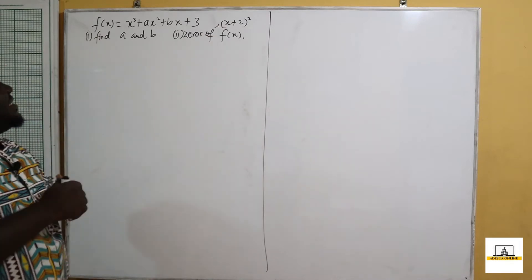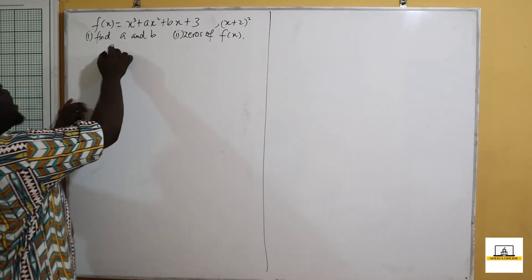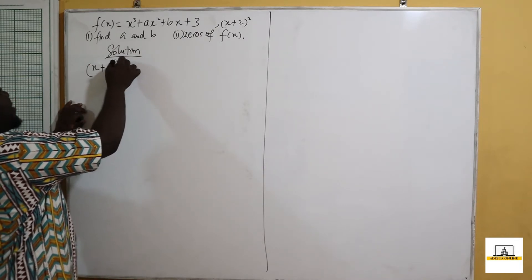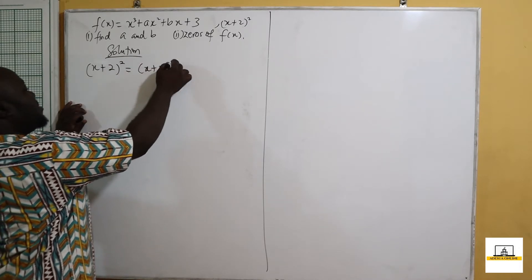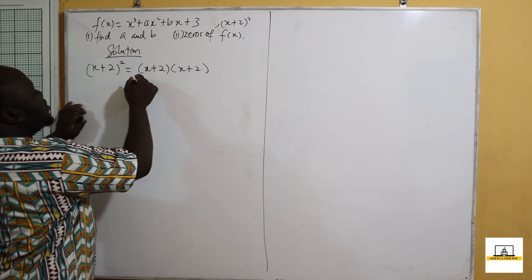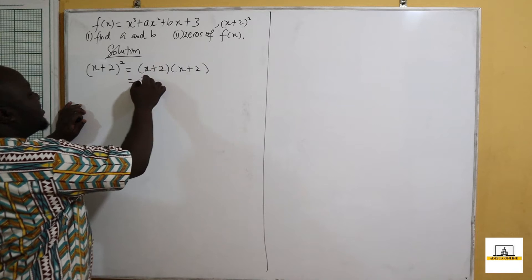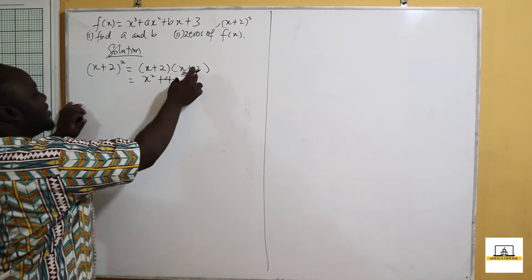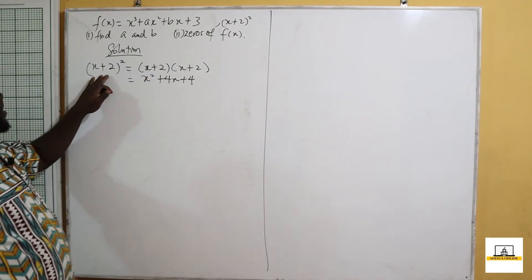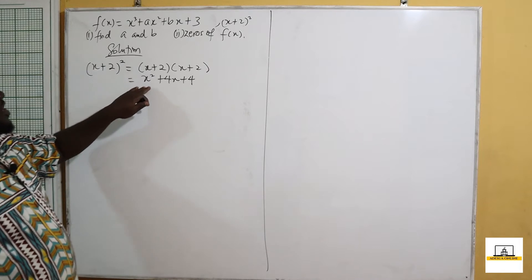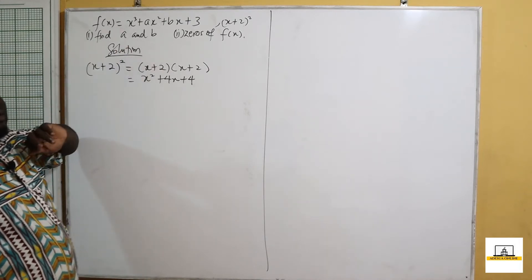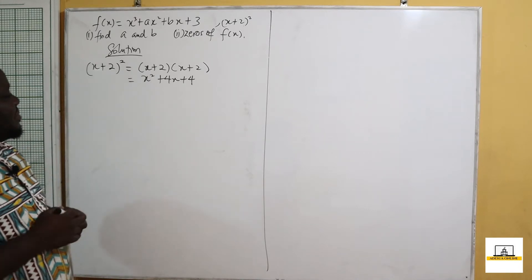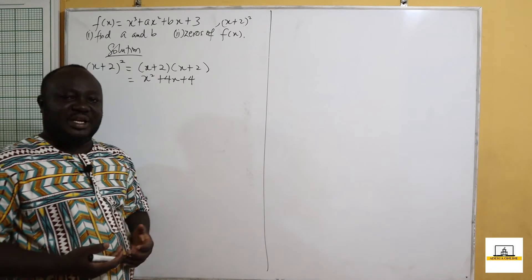So if this is a factor, this means that if we should expand x plus 2 all squared, this is going to give me x plus 2 and then x plus 2. So this is going to give me x squared plus 2x plus 2x plus 4, which gives us x squared plus 4x plus 4.